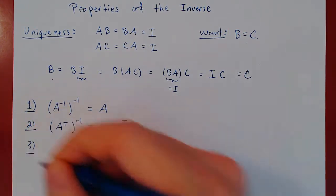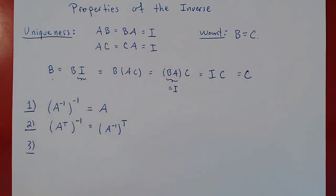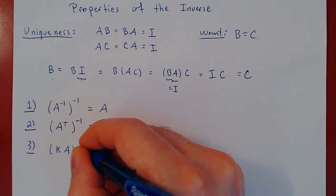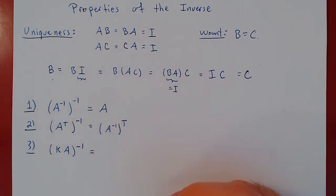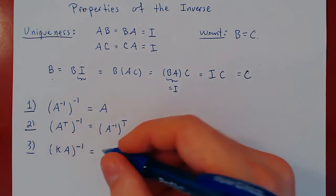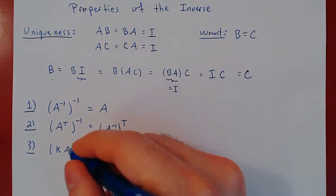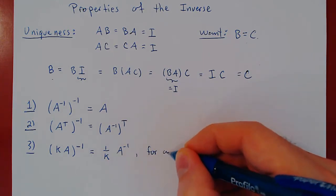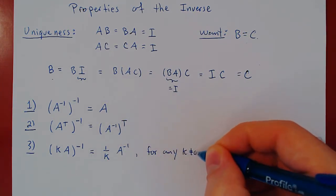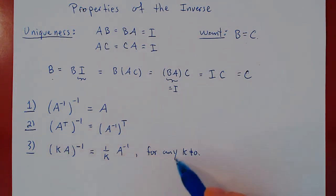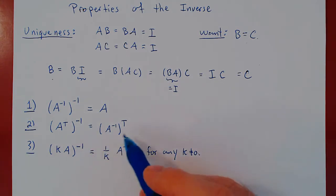Third property: what if you multiply an invertible matrix A by a non-zero real number K? The result is invertible, and the inverse will simply be 1 over K times the inverse of matrix A. This holds for any non-zero real number K. So any non-zero multiple of an invertible matrix is also invertible, and the inverse of KA is (1/K) A inverse.